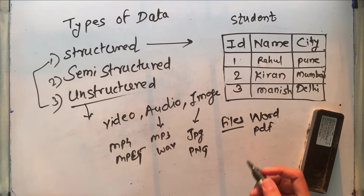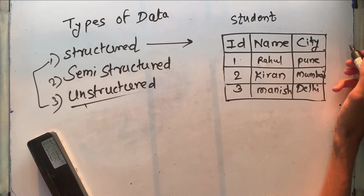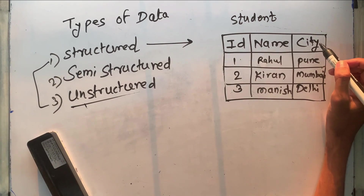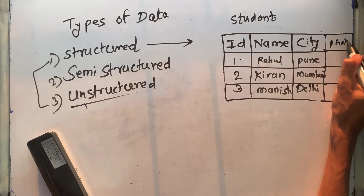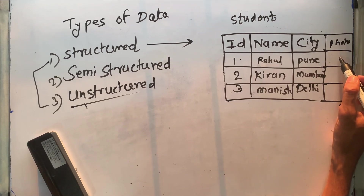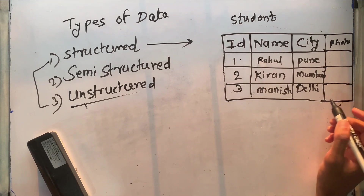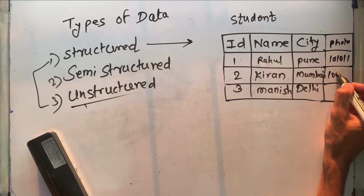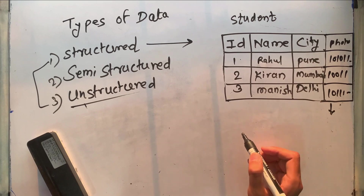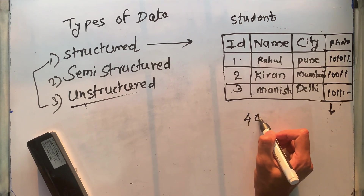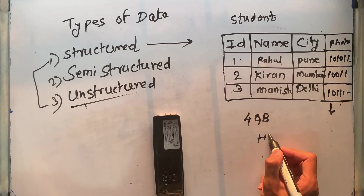To understand the difference between structured, semi-structured, and unstructured, consider this scenario: if we are saving data in a table and we also need to save an image of each student, we would add an image column. The image can be stored in binary format. However, there is a certain size limit for the database or table — say 4 GB.